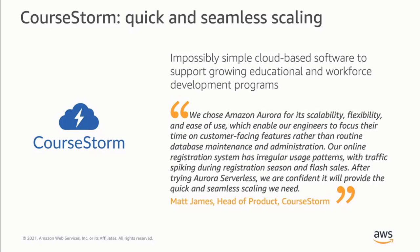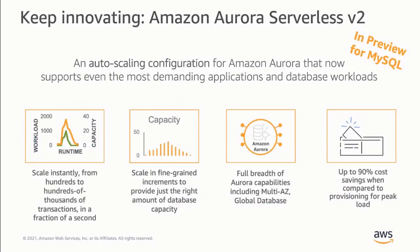We keep innovating in this space and have already announced Serverless version 2. This technology is available in preview for MySQL and will be generally available soon for both MySQL and PostgreSQL compatible Aurora. With V2, we hope to take capacity scaling a big step further, providing capacity scaling in a fraction of a second, with much finer granularity to deliver just the right amount of capacity to your workload. This will result in even better cost savings, and you will have access to the full breadth of Aurora capabilities, including global database, multi-AZ, and so on.